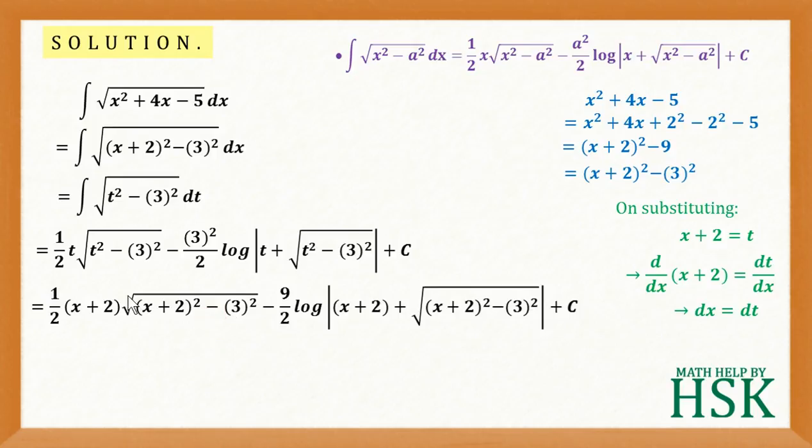Now this term x plus 2 whole square minus 3 square came from x square plus 4x minus 5. So both these terms can be simplified as x square plus 4x minus 5.